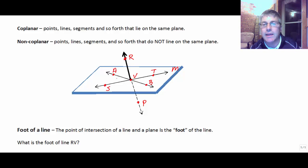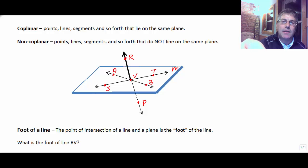Whereas R and P don't lie in plane M. Points R, V, and T would be non-coplanar because those are three points that lie in different planes. Or we could say point R or P is not coplanar with line ST.